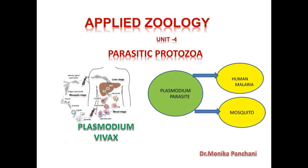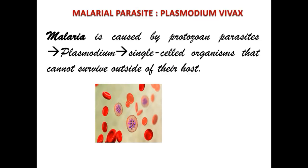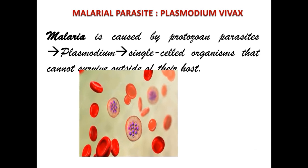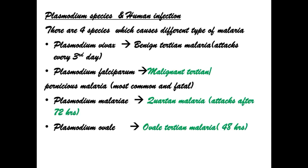Dear students, I am going to present the second part of Unit 4: Parasitic Protozoa. The organism is Plasmodium vivax. Plasmodium vivax is also named as the malarial parasite. Malaria is caused by the protozoan parasite Plasmodium, which is a single-celled organism that cannot survive outside of its host.